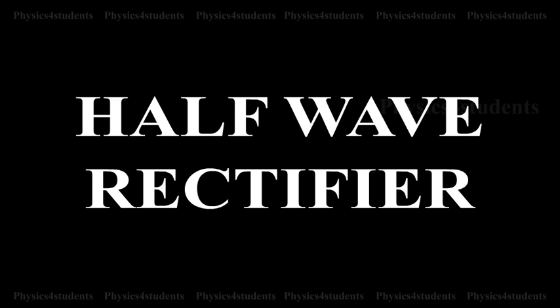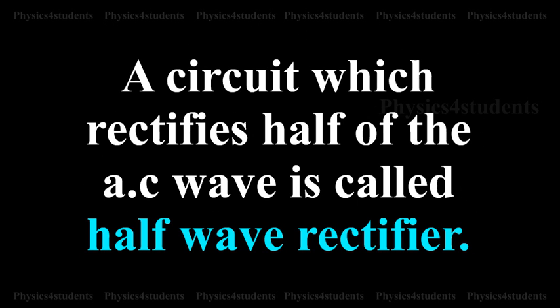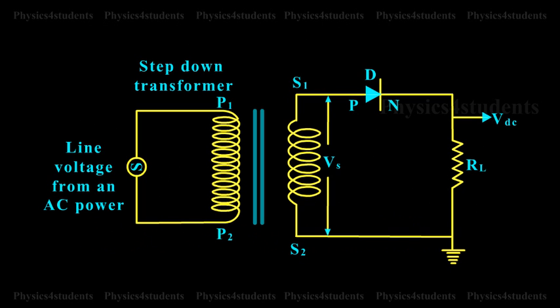Half-Wave Rectifier. A circuit which rectifies half of the AC wave is called Half-Wave Rectifier. Animation shows the circuit for Half-Wave Rectification.